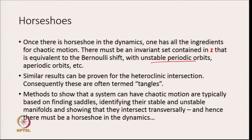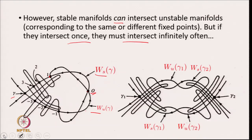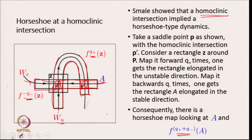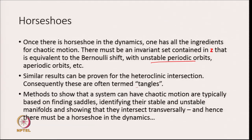Because once there is a horseshoe in the dynamics one has all the ingredients for chaotic motion: there must be invariant sets contained in z equivalent to the Bernoulli shift, there must be unstable periodic orbits, and so on. Similarly, the same argument applies to the heteroclinic intersection, and because the motion is so complicated these are often called homoclinic or heteroclinic tangles.